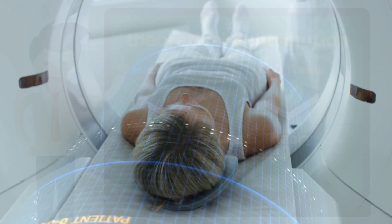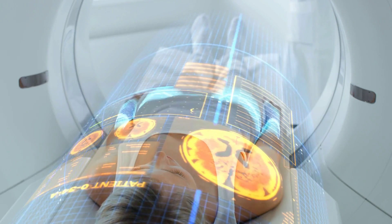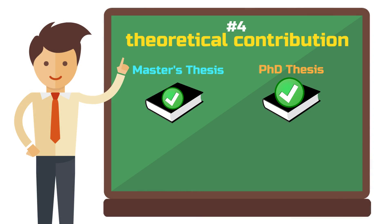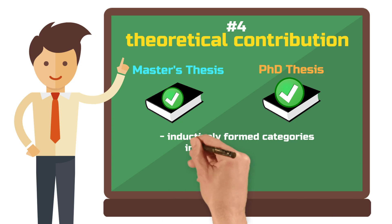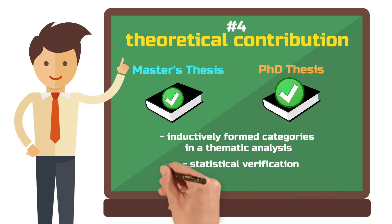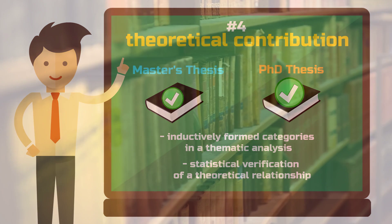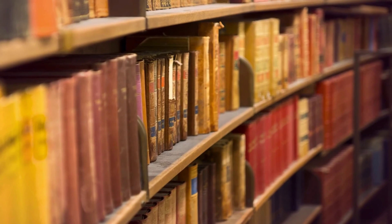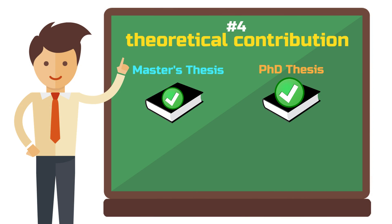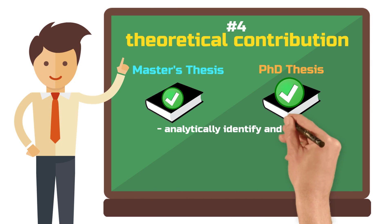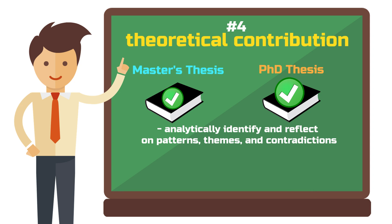For disciplines outside of social sciences, it is not the quality of the theory but the degree of innovation you can achieve with your thesis. In a master's thesis, you're not expected to independently develop or extend a theory, but anything you can contribute in this direction is very good. Approaches of generating new theory include inductively formed codes in a thematic analysis or the statistical verification of a theoretical relationship in a model. For literature-based work, it is most important that you not only summarize the literature descriptively, but that you analytically identify and reflect on patterns, themes, and contradictions. In the social sciences, you can also generate a theoretical contribution from literature.